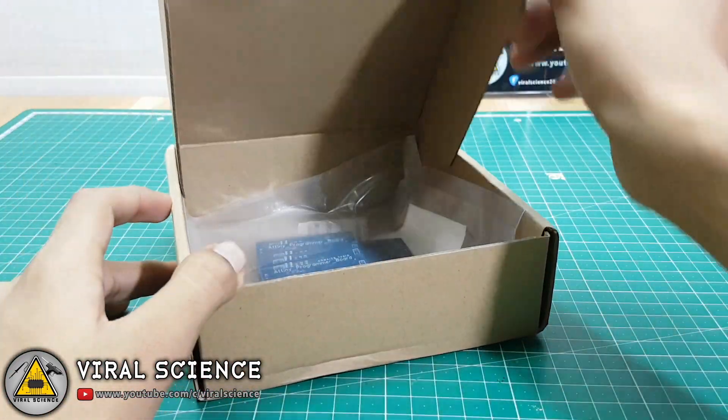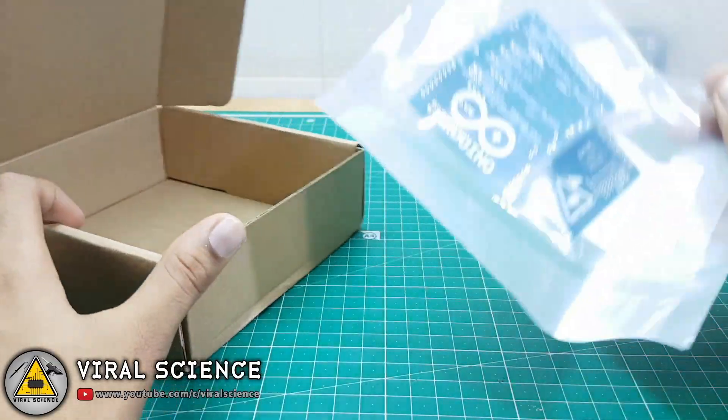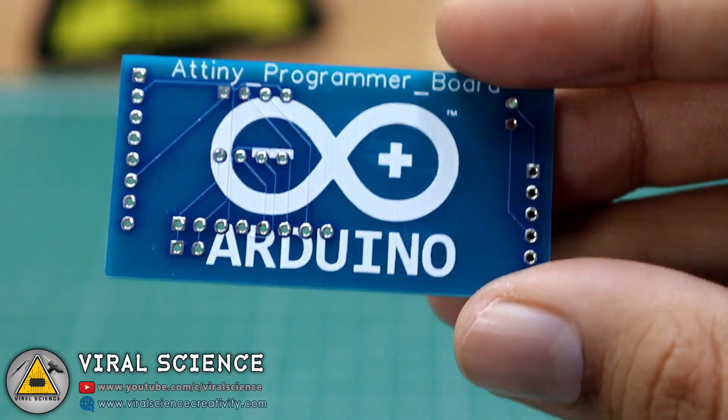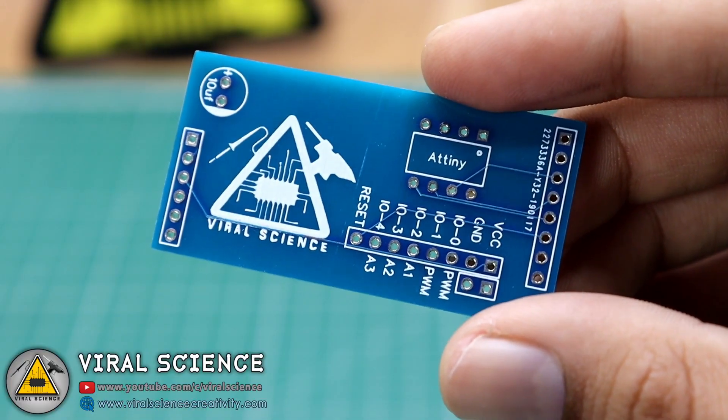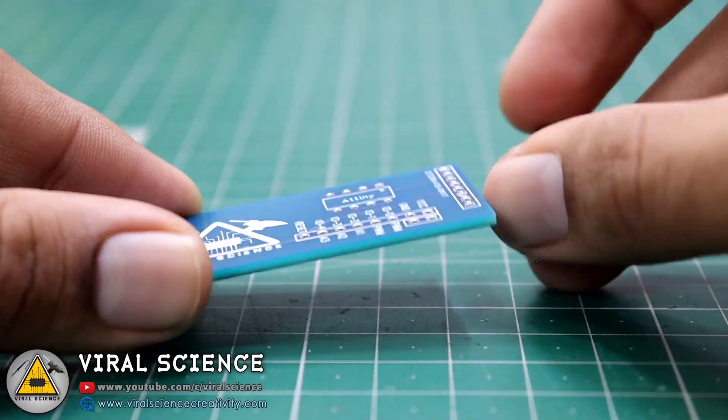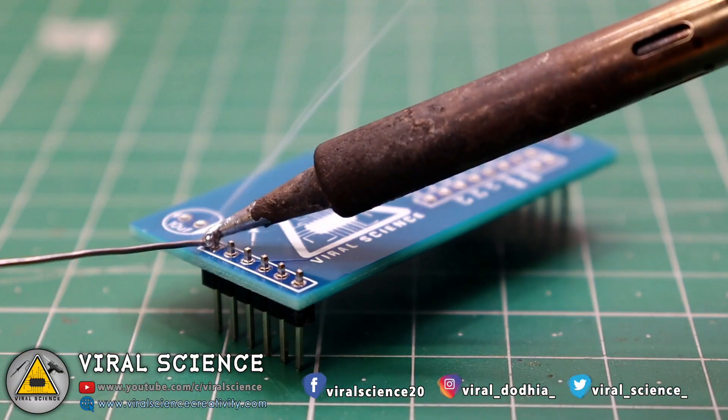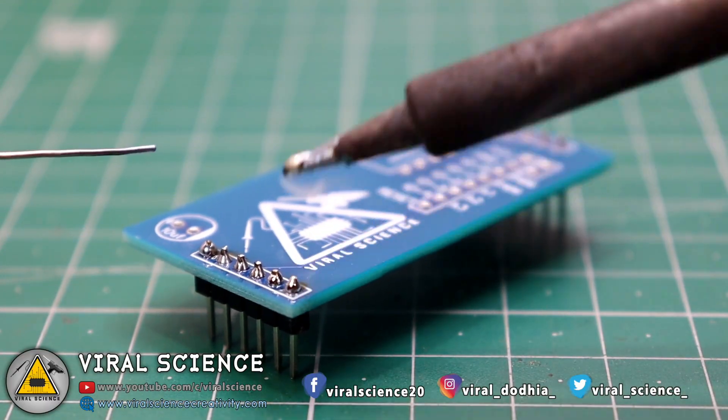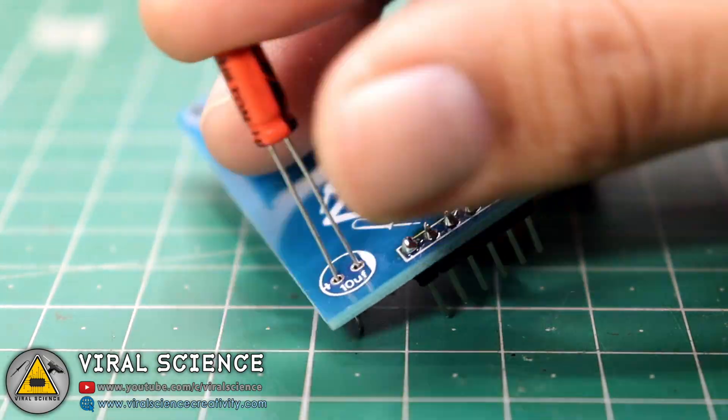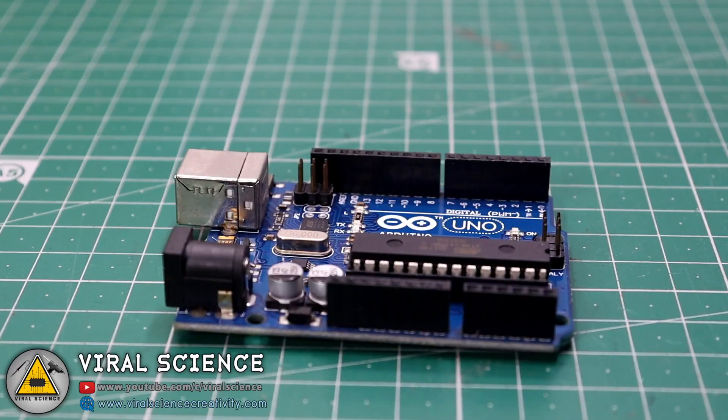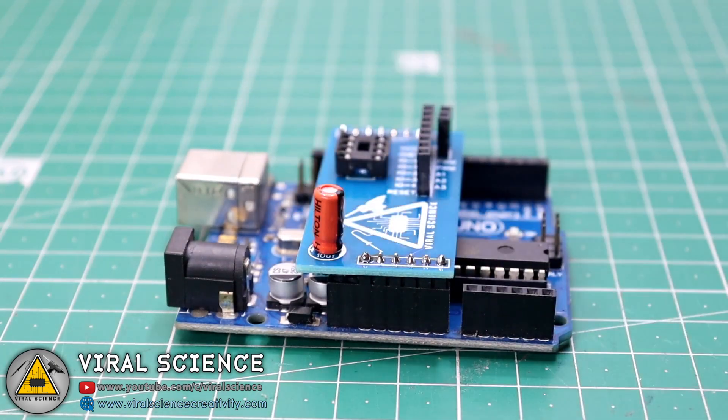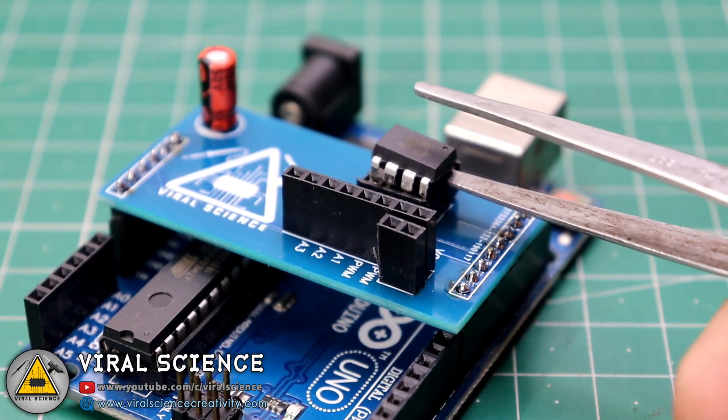Now we'll connect all the components to the PCB board and start soldering. After soldering, we'll connect the ATiny85 microcontroller to the PCB board.